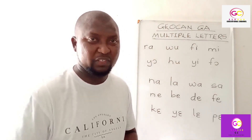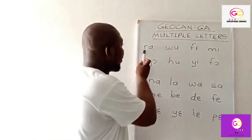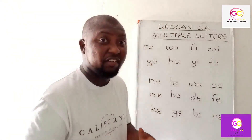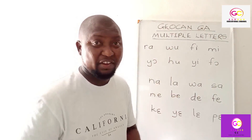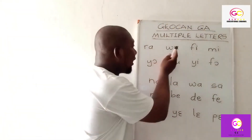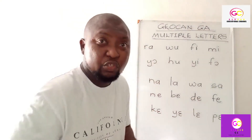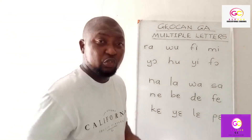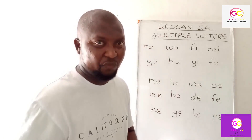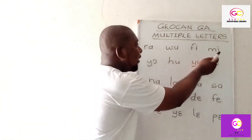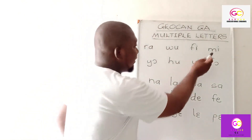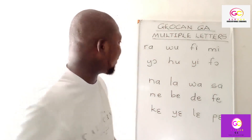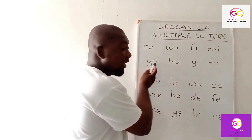Now we have 'r' and 'a'. When you join 'r' and 'a' together — remembering the sounds of the alphabet — when you join them you get the sound 'me'. Okay, good.